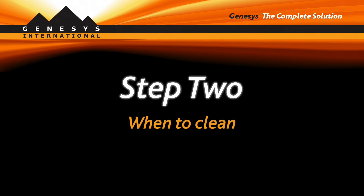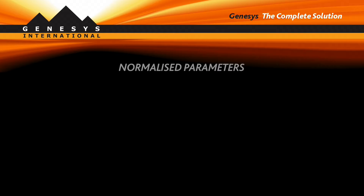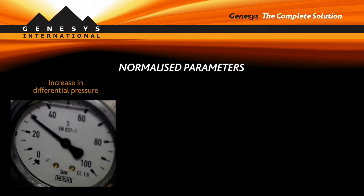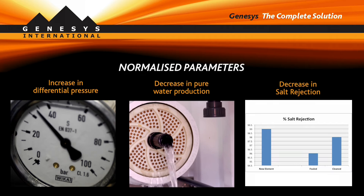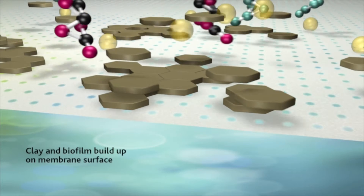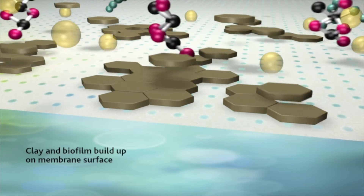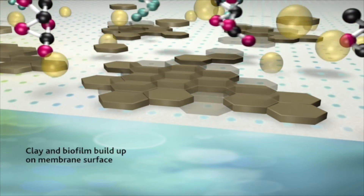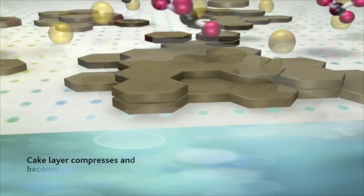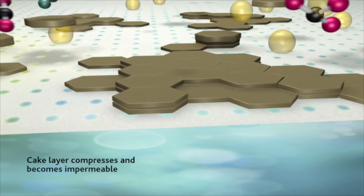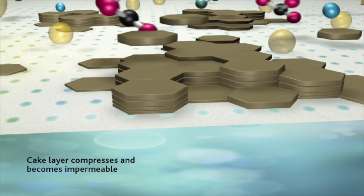Step 2: When to clean. Membrane manufacturers recommend cleaning when normalized parameters change by 10–15%. Delaying cleaning causes foulant compression into the membrane, making removal more difficult. Extra cleaning cycles require more time and chemicals.